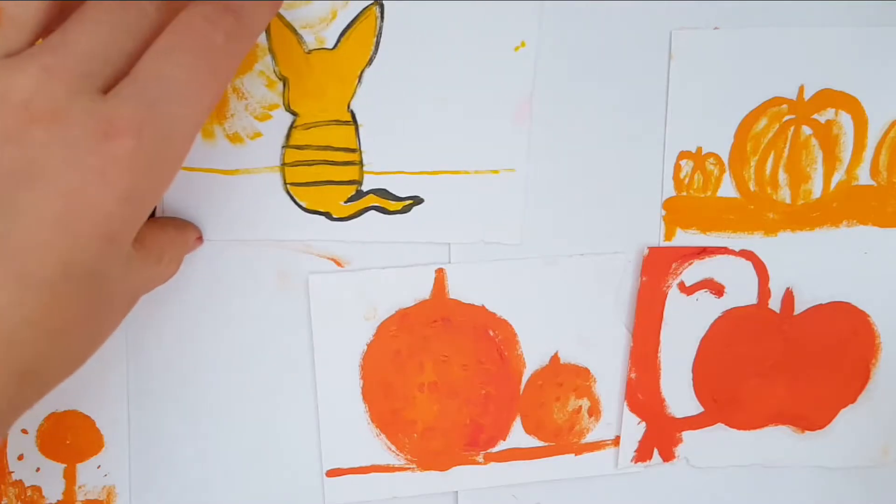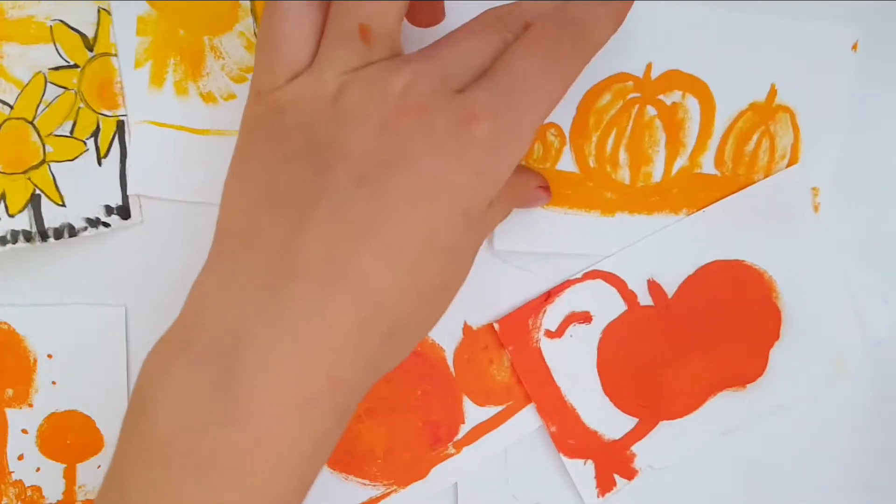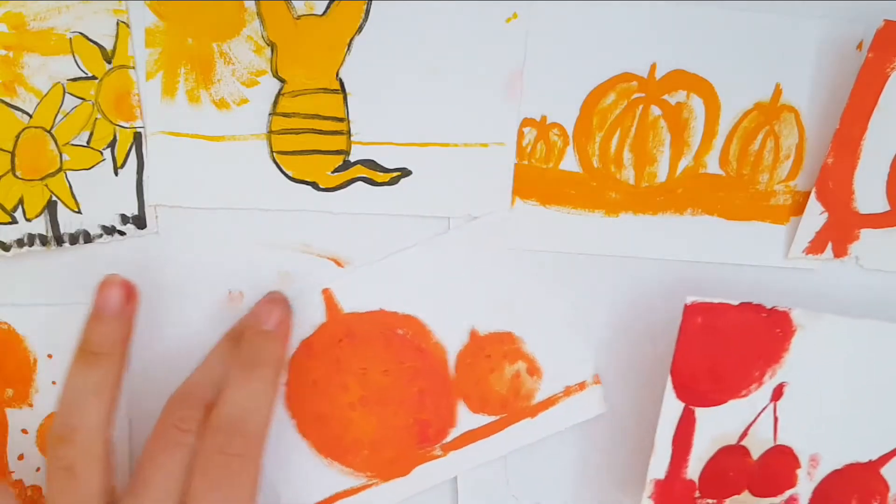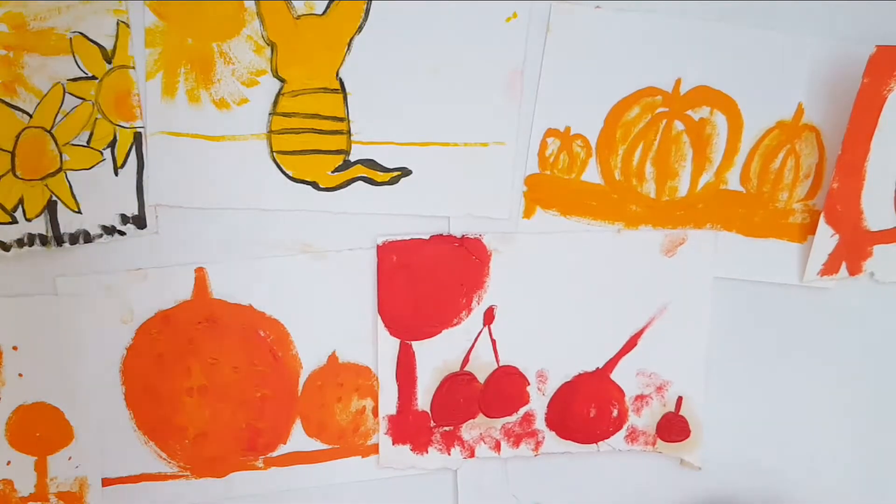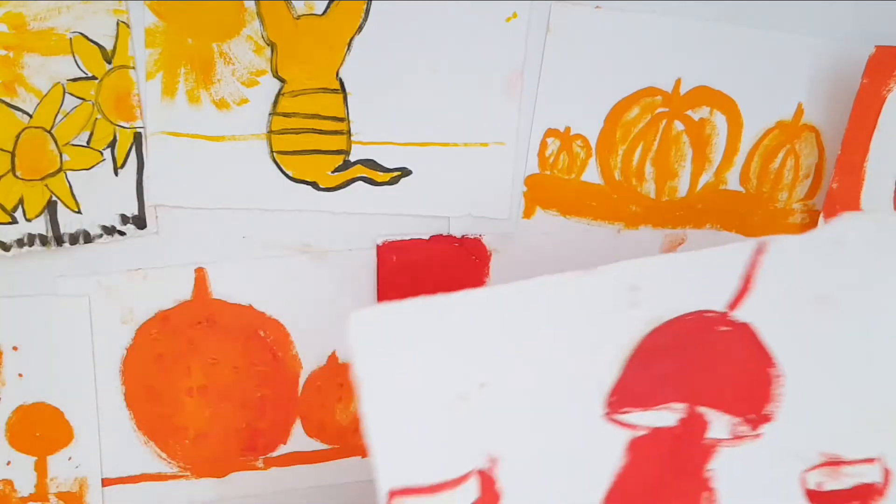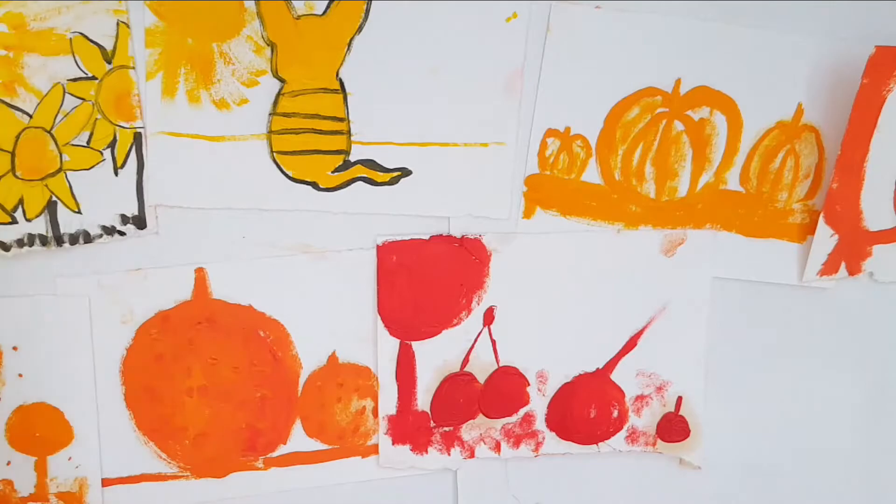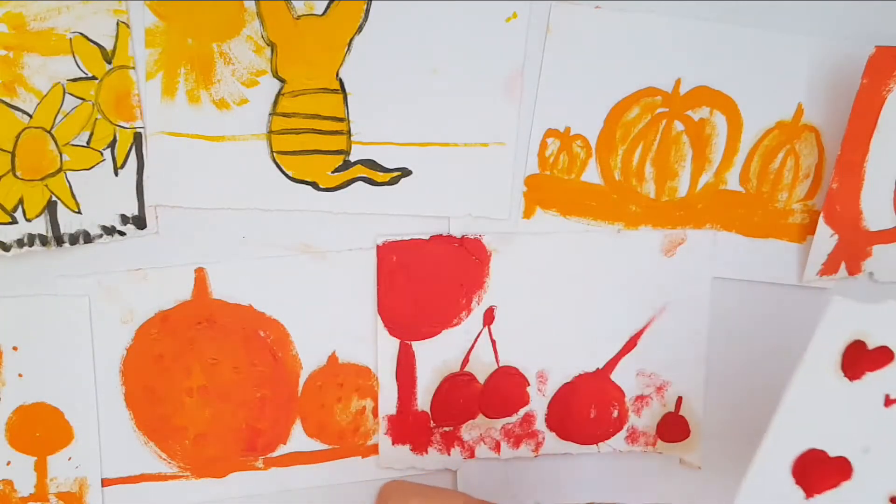Red eyes because she's a demon eating an apple. Then we have some cherries that fell from a tree, really creative. Then we have wine just because that was the only red thing. Then we have hearts, again hearts.